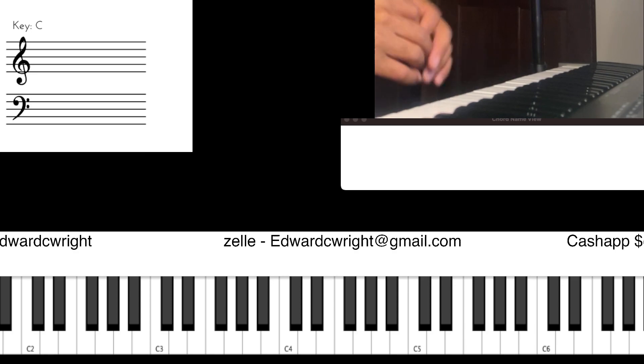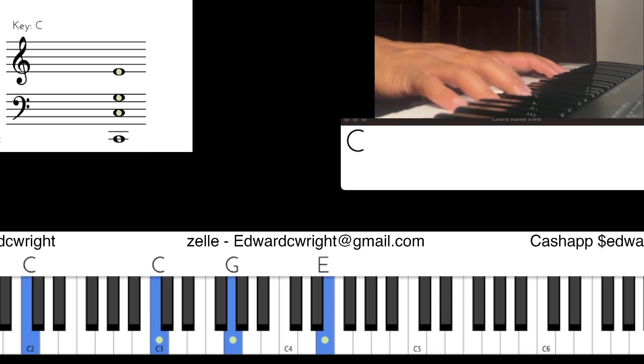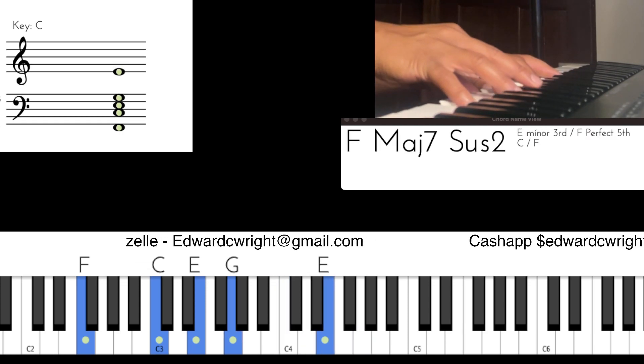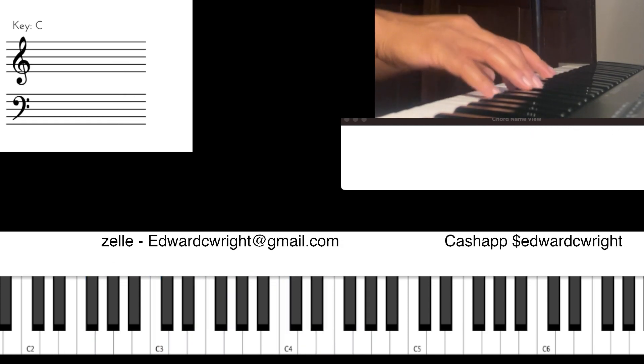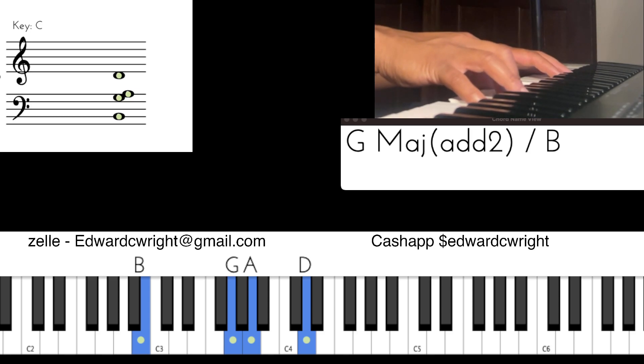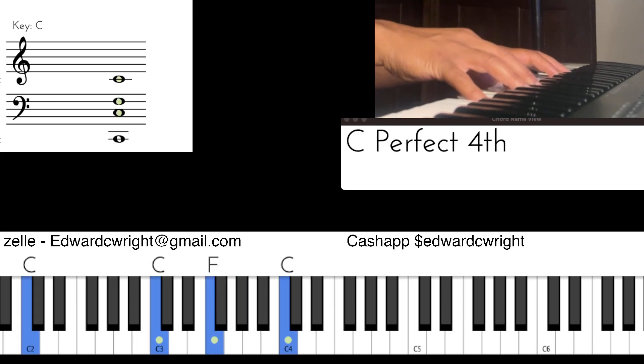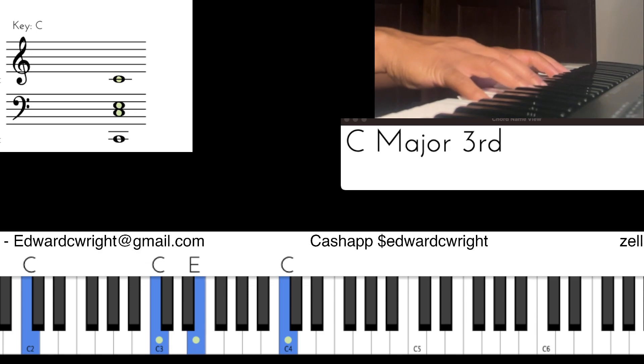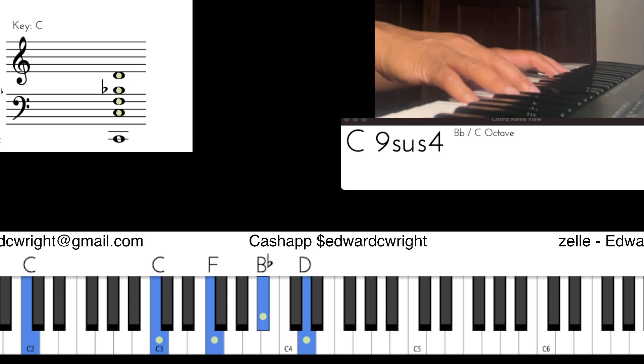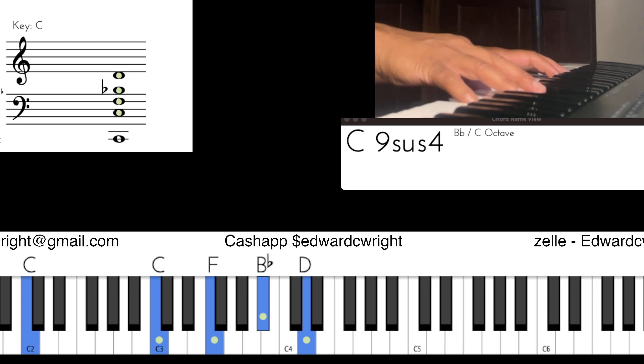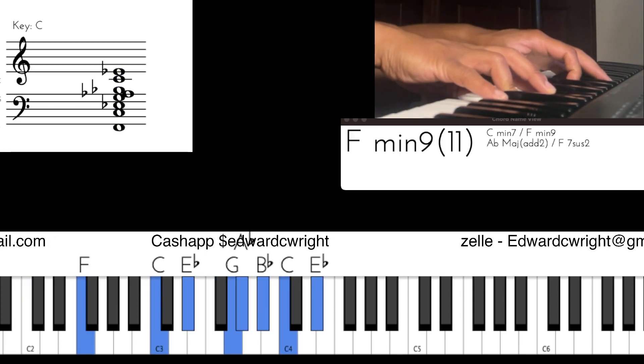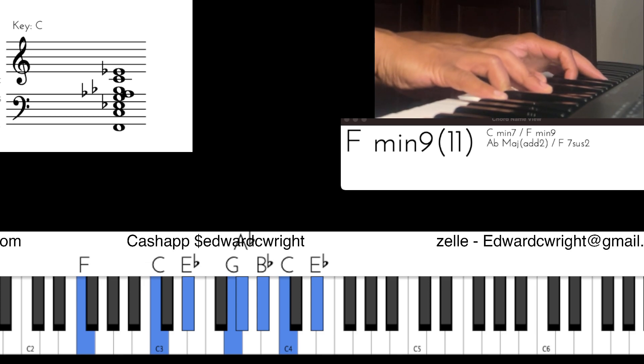So again, how are we going to put that in? Four. The G, F of A, G over B. That C perfect four there. Two, three. And let's go to that nine sus four. And then go to that four, the four minor nine eleven.